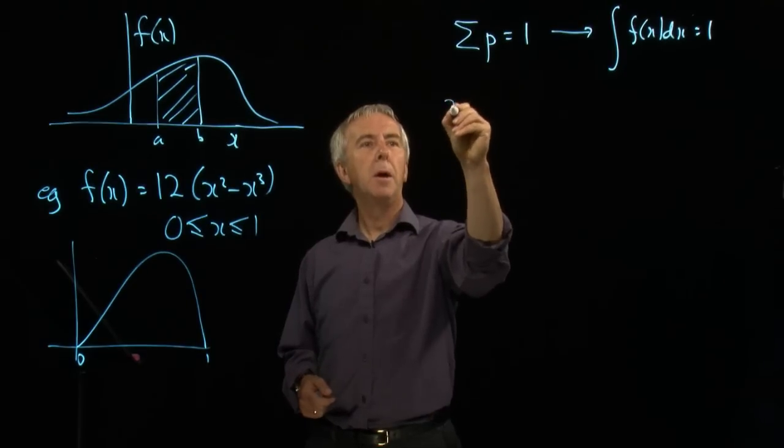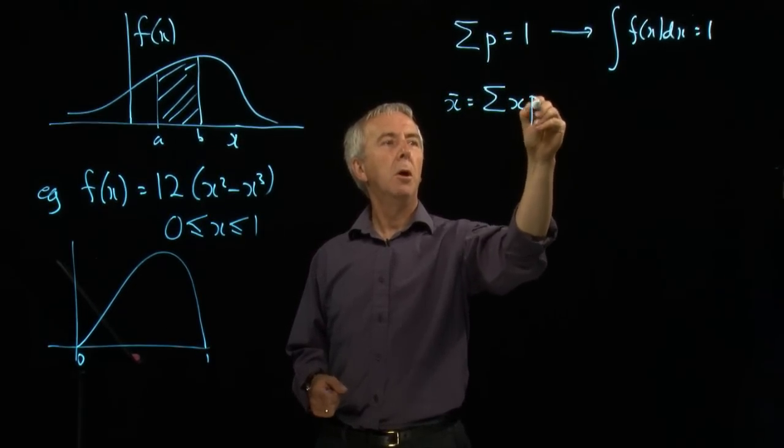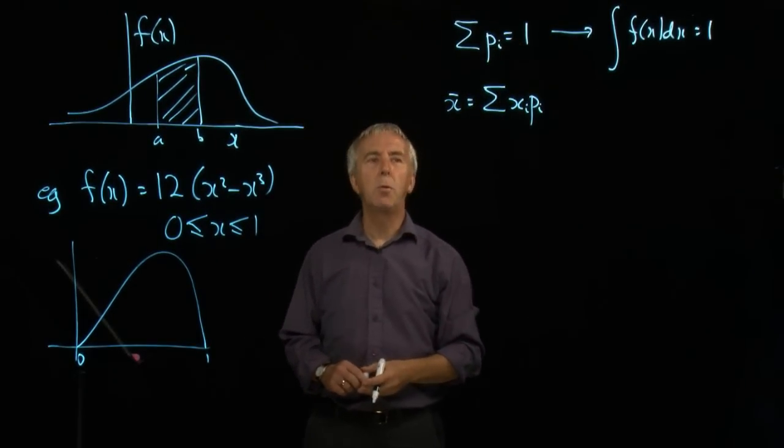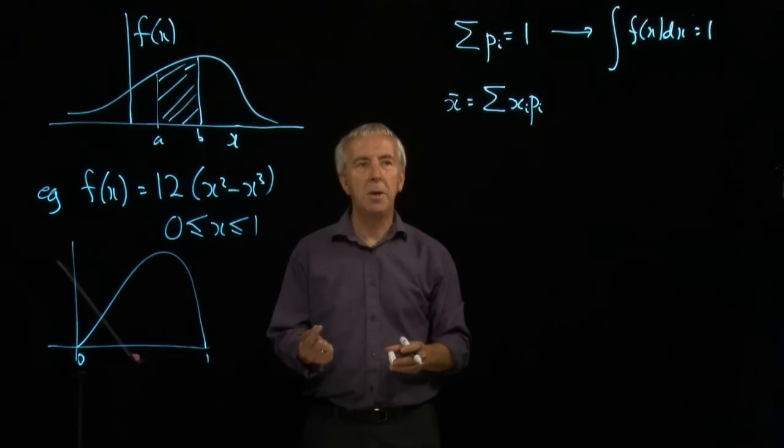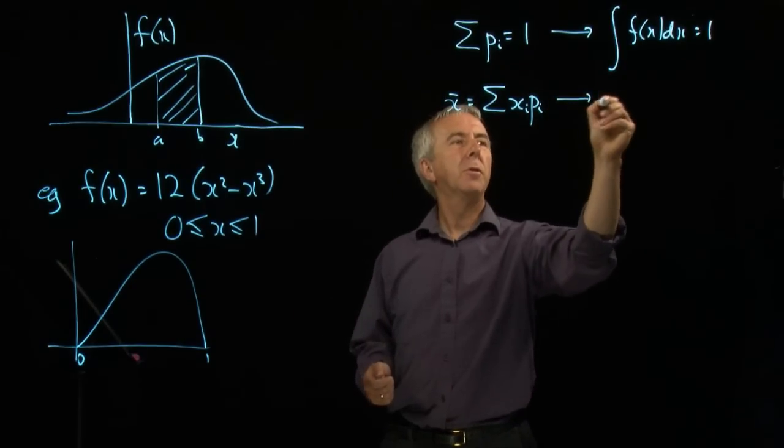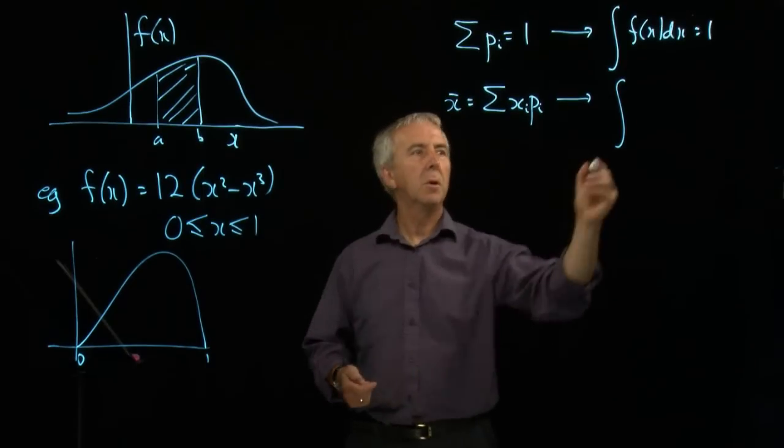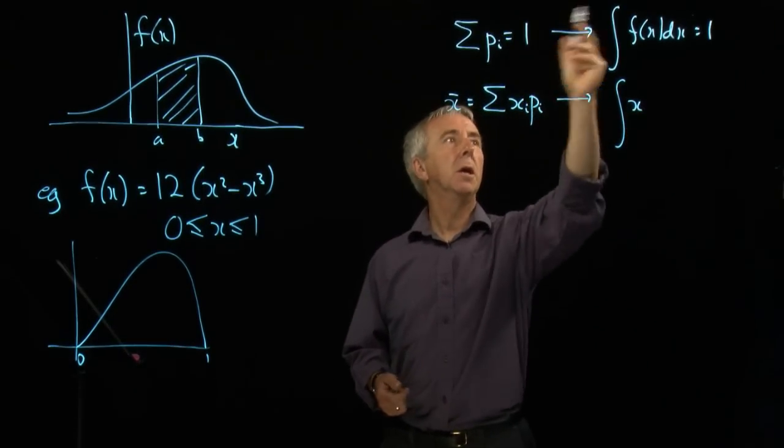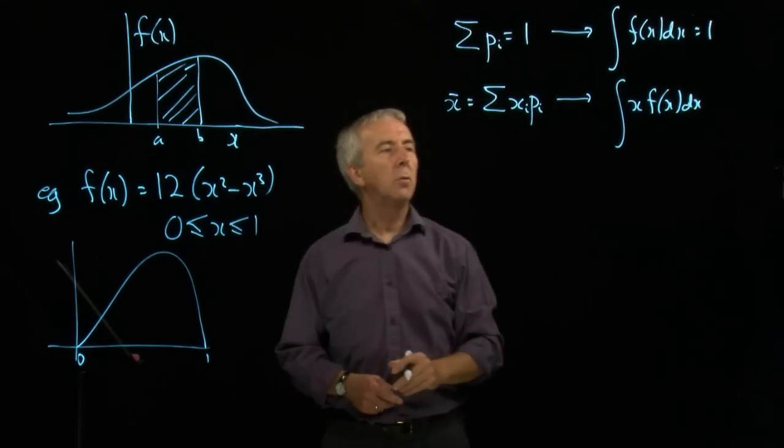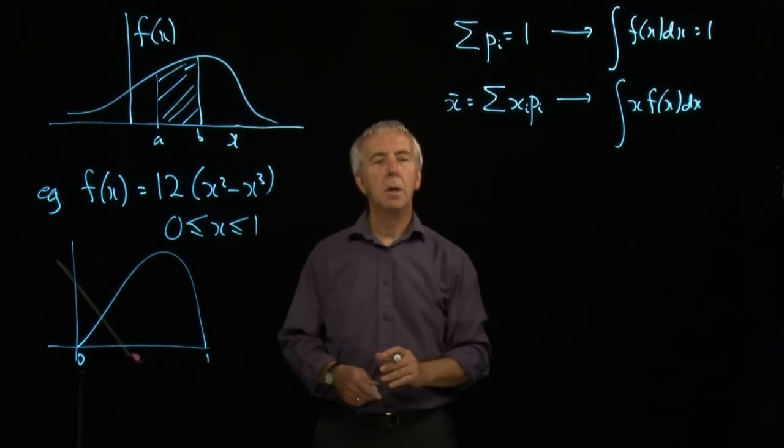Now we can use a very similar analogy to find the mean of a continuous variable. If we remember, x̄ the mean for a discrete variable was the sum of each x times its probability. So if we add up each x times the probability of that x, we will get the mean. And so that becomes, with a continuous variable, sigma becomes the integral, x, and then p is replaced by f(x)dx. If we do that calculation over the whole range of x, all possible values of x, we will get the mean.